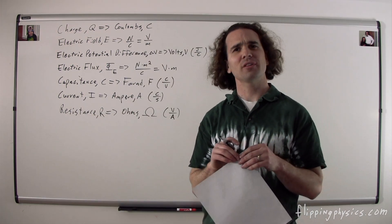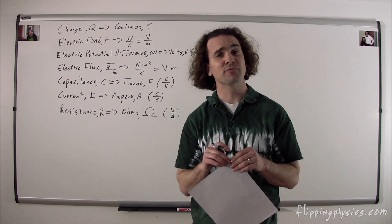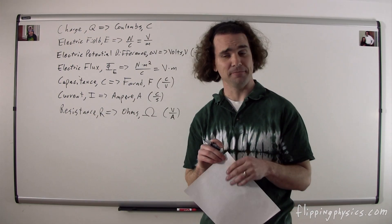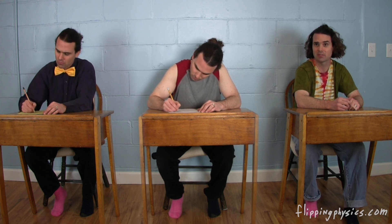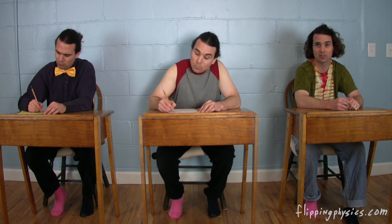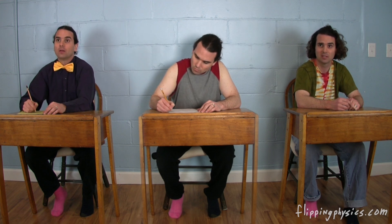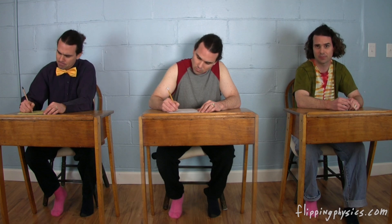Bo, what are the symbol and dimensions for resistivity? The symbol for resistivity is a lowercase rho, which looks like a curly lowercase p, and shouldn't be confused with volumetric mass or charge density, even though it uses the exact same symbol. The dimensions for resistivity are ohm meters.